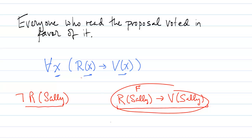So for all the people who didn't read the proposal, this conditional statement automatically holds. In order for the whole universally quantified statement to be true, it must also be the case that for every individual who did read the proposal, that they voted in favor of it.